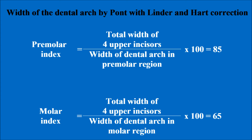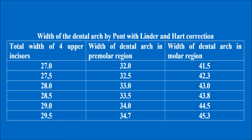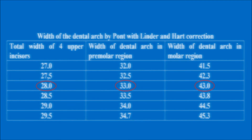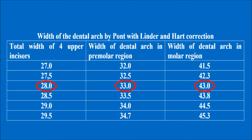Measured premolar and molar values by PON with Linda Hart's corrections equal 85 and 65 respectively. For example, if the sum of 4 upper incisors equals 28 mm, normal width of the dental arch should equal 33 mm in the premolar region and 43 mm in the molar region.